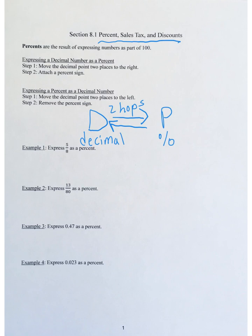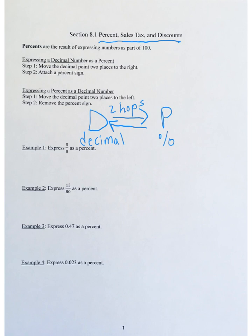Percents are simply the result of expressing numbers as part of 100. So technically you're either multiplying by 100 or dividing by 100 when you move those decimal points two hops. To express a decimal as a percent: move the decimal point right two hops and attach the percent symbol. To go backwards, move left two hops and remove the percent sign.